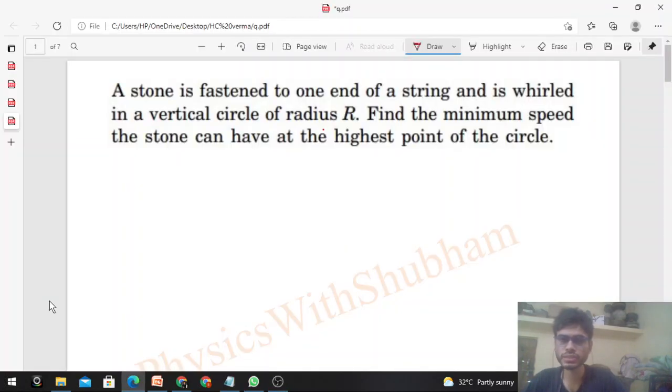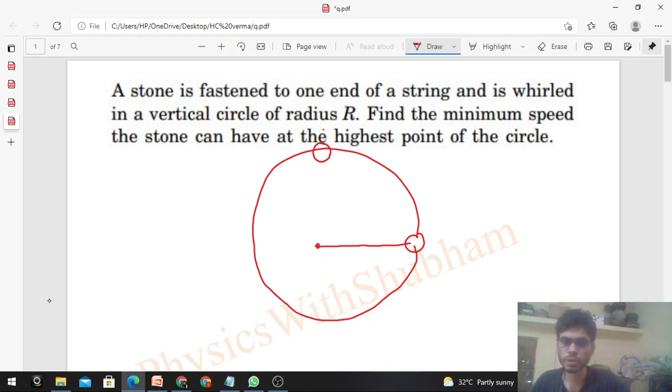Okay, hi everyone. Today let's discuss this interesting problem. A stone is fastened to one end of a string and is whirled in a vertical circle of radius capital R. Find the minimum speed the stone can have at the highest point of the circle. So we move a stone on one string in a vertical circle, and we have to find out the minimum possible speed of this stone at the topmost point.